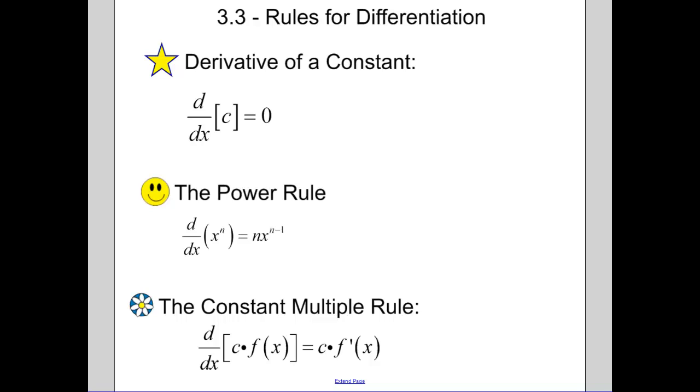The derivative of a constant is zero. Now the power rule, this is basically a shortcut. So we don't have to use limits after today to find derivatives, unless I tell you to use the limits to find the derivative.